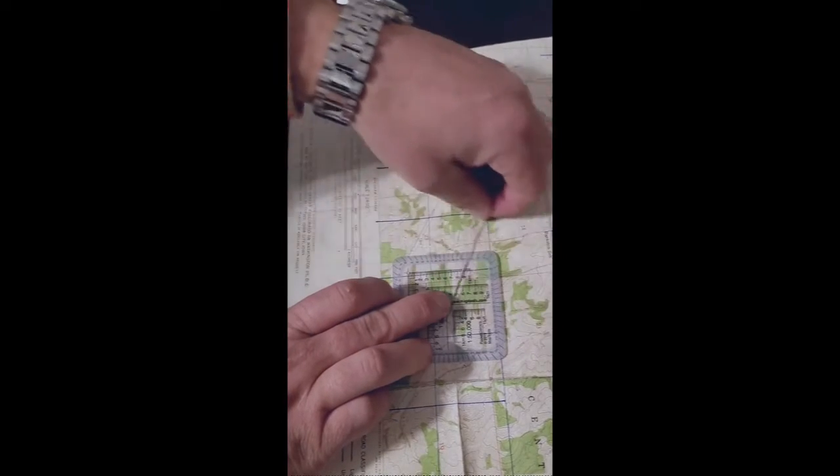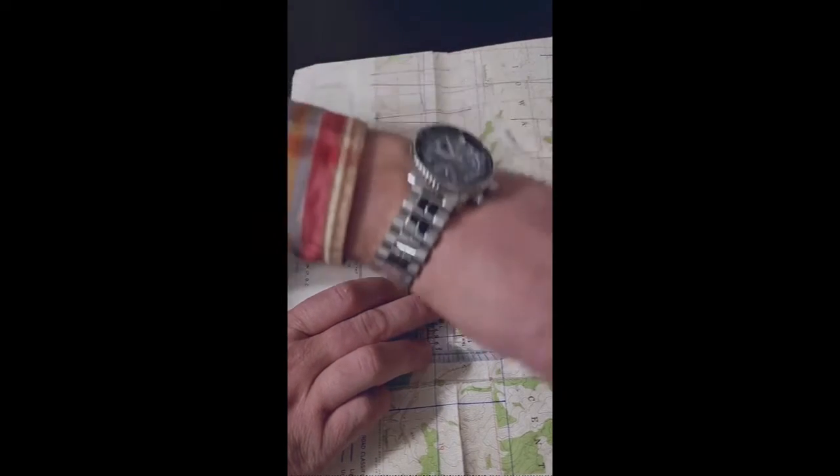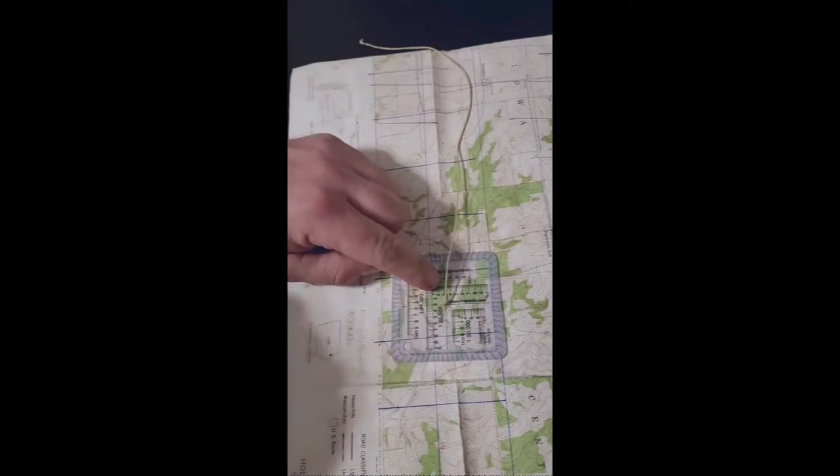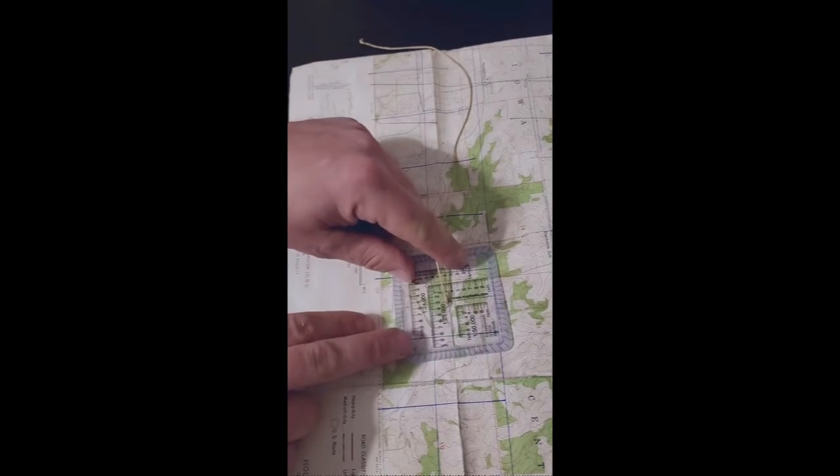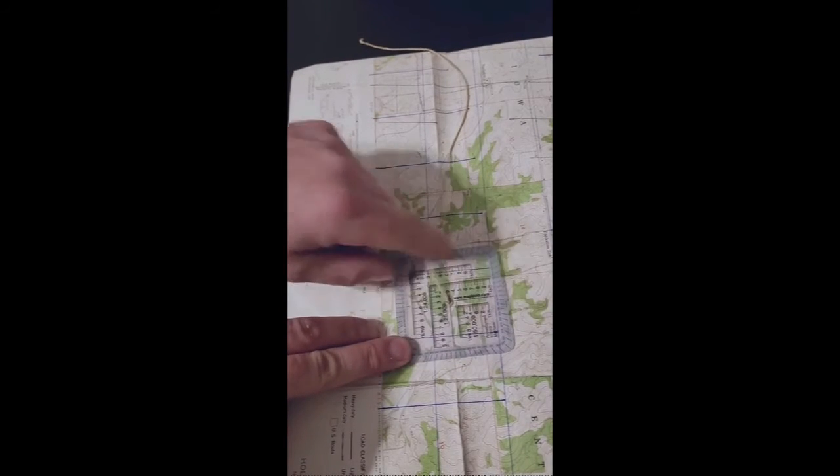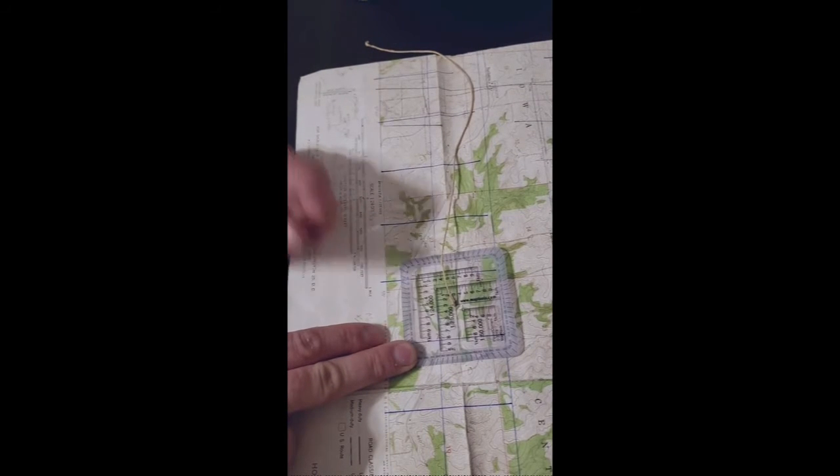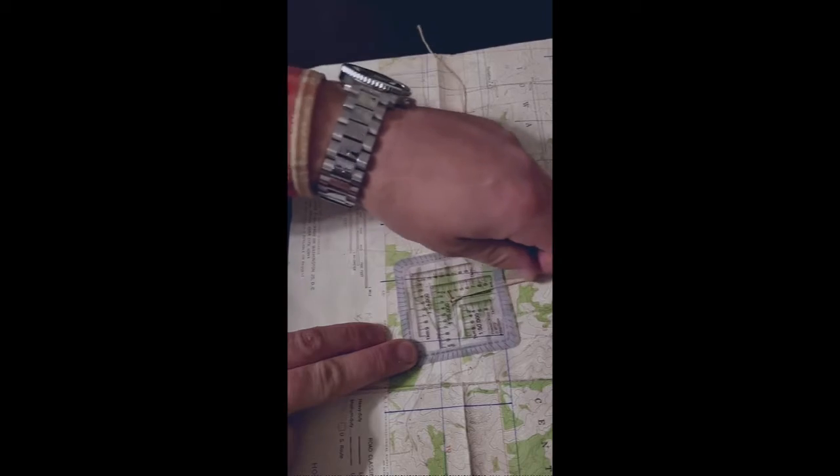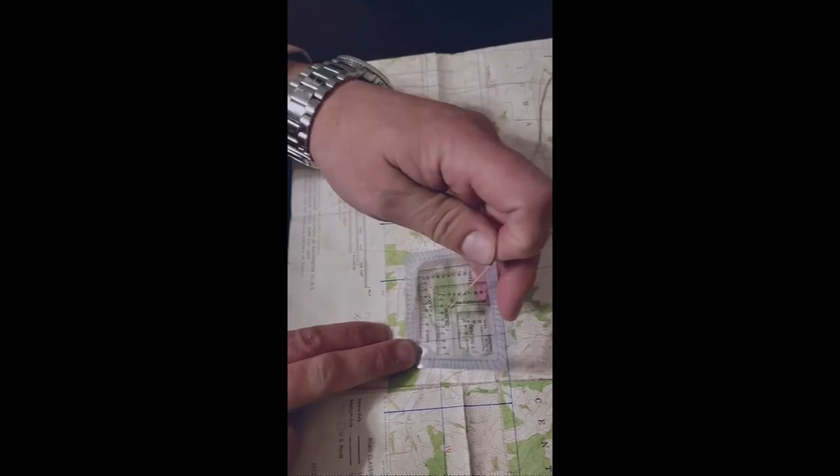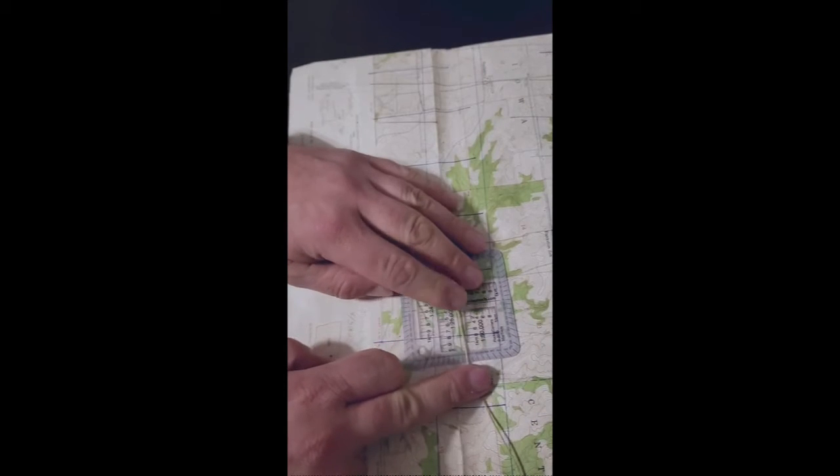Then you can run this all the way around the diameter of the grid overlay and you'll see that all of the degrees are going to be marked along the edge of this. You can basically find out what direction you're going.